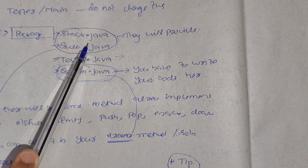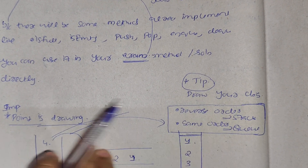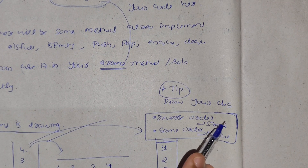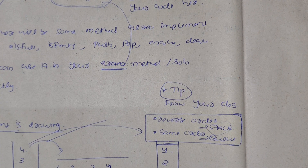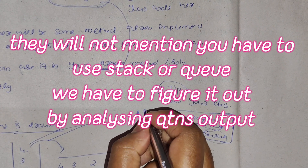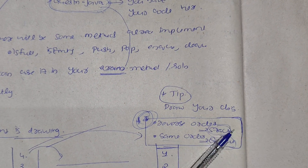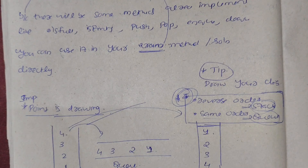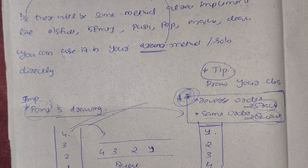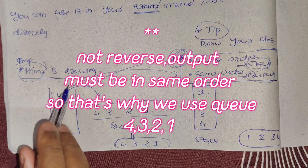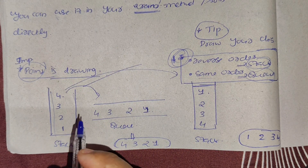There is a tip: draw your data structure. In the question, sometimes they will ask you to produce output in reverse order — in that case use a stack. The question will mention a data structure requirement and you have to use the appropriate one. Reverse order means stack; same order means queue. Keep this in mind. Your trainers will definitely share these things too. Drawing your data structure visually before coding helps clarify which one to use.